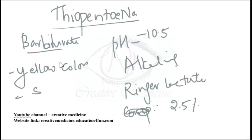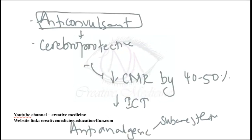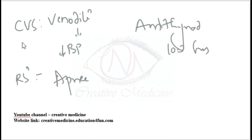Summary: Thiopentone sodium is a barbiturate, yellow in color, with a pH of 10.5, making it highly alkaline. It cannot be prepared with Ringer's lactate solution, has local complications, is used at 2.5% concentration, and is GABA-mimetic. On CNS, ultra-fast onset within 15 seconds, peak at 1 minute, with redistribution causing the patient to become conscious within 15 to 20 minutes. It is a last-resort anticonvulsant, cerebroprotective, decreasing cerebral metabolic requirement by 40 to 50% and intracranial tension. It is anti-analgesic in sub-anesthetic doses. Cardiovascular: venodilatation causing hypotension. Respiratory: transient apnea. Antithyroid with a half-life of 10.3 hours.